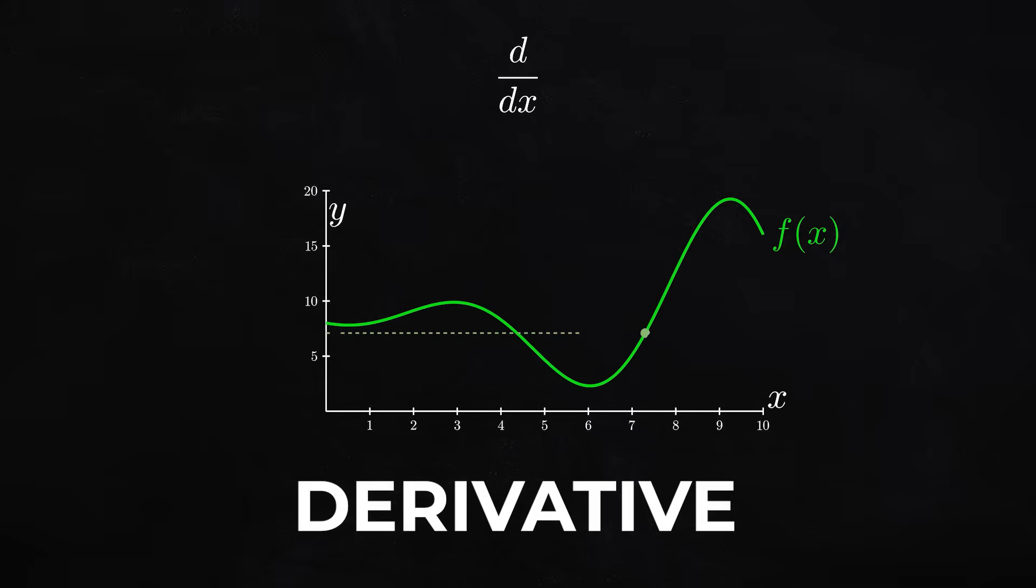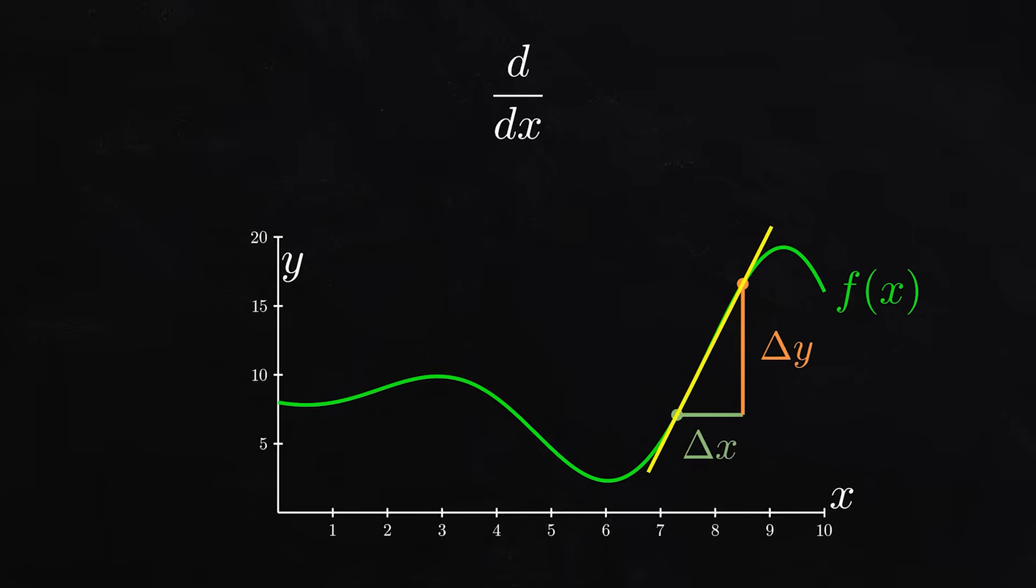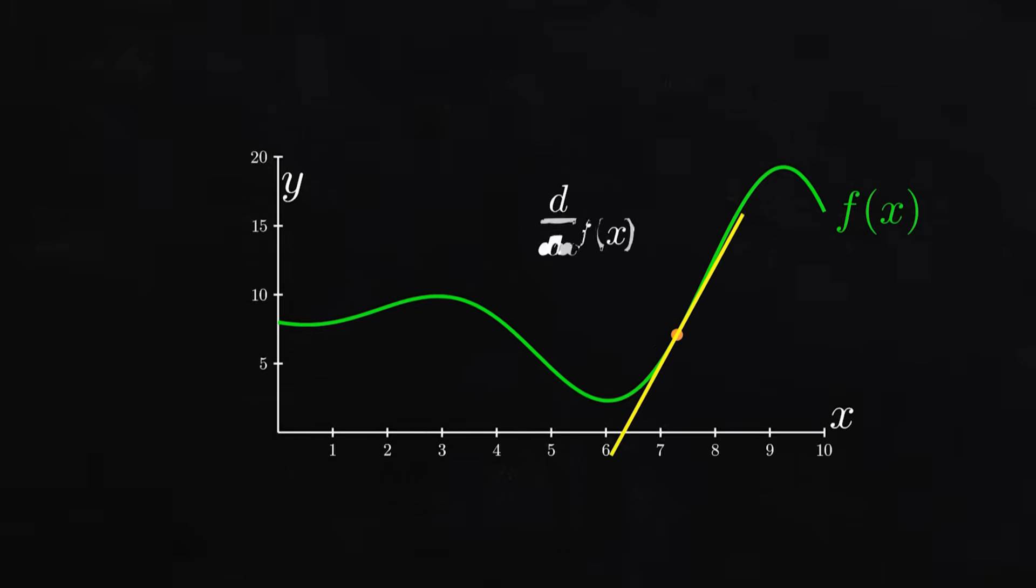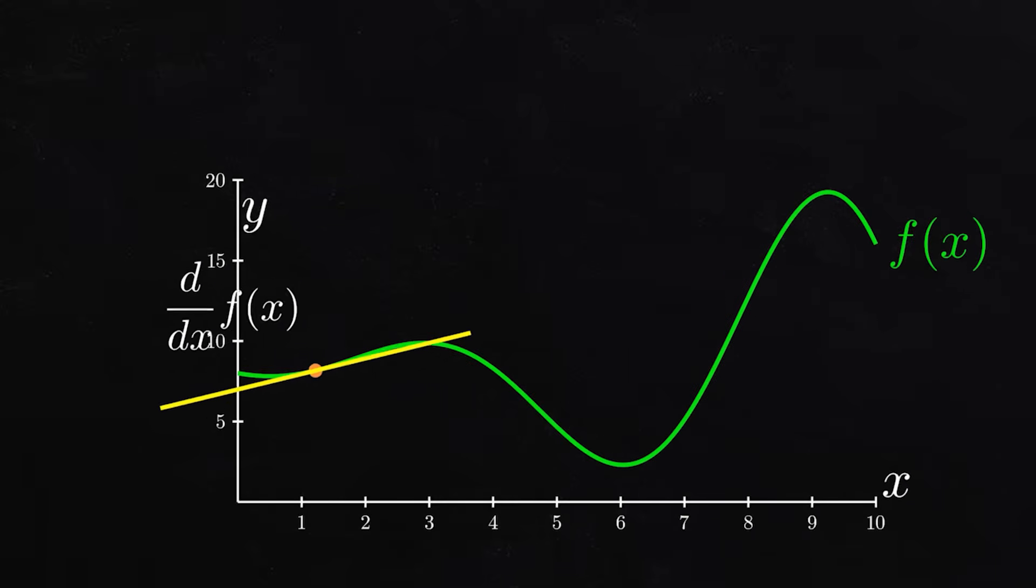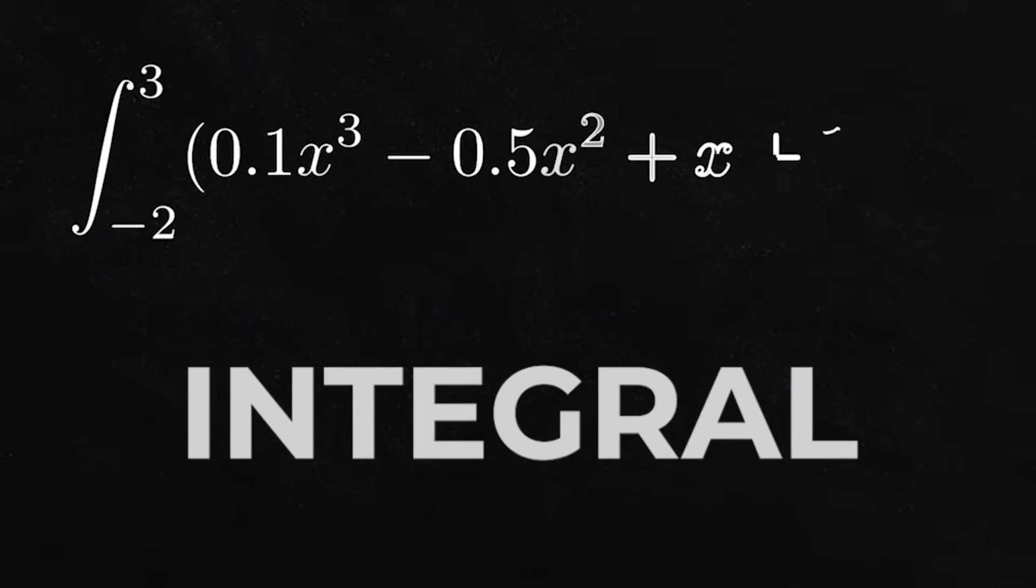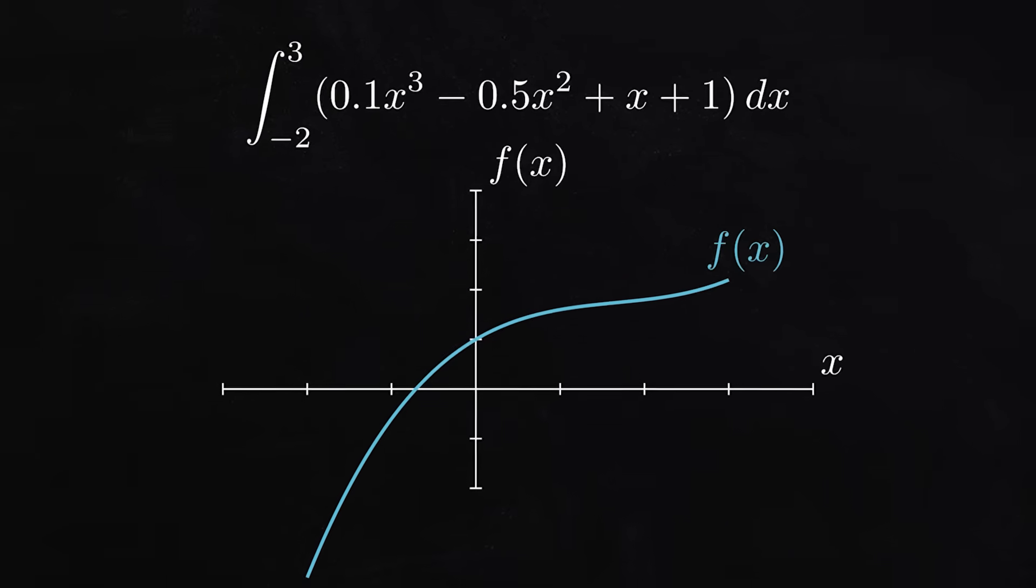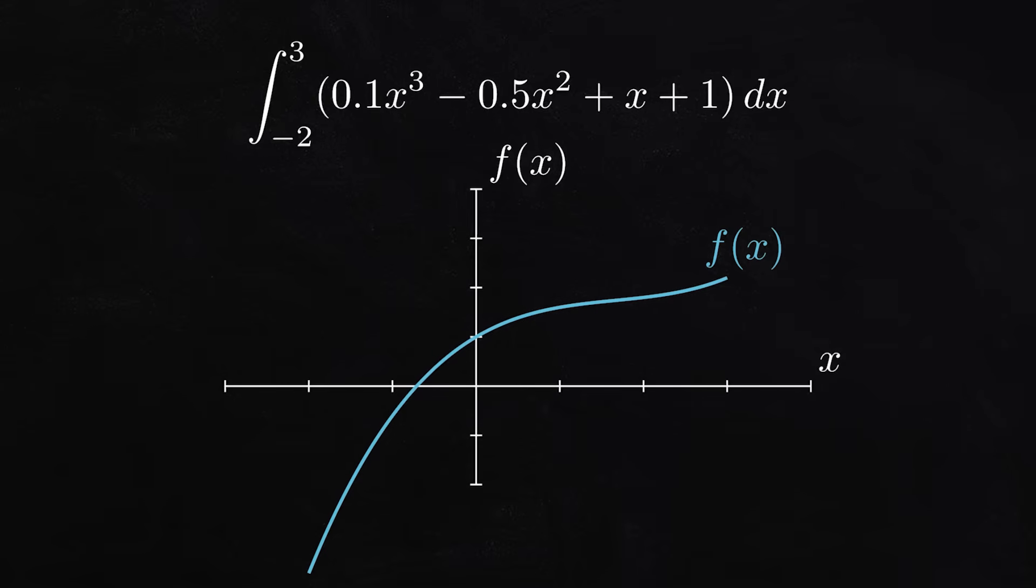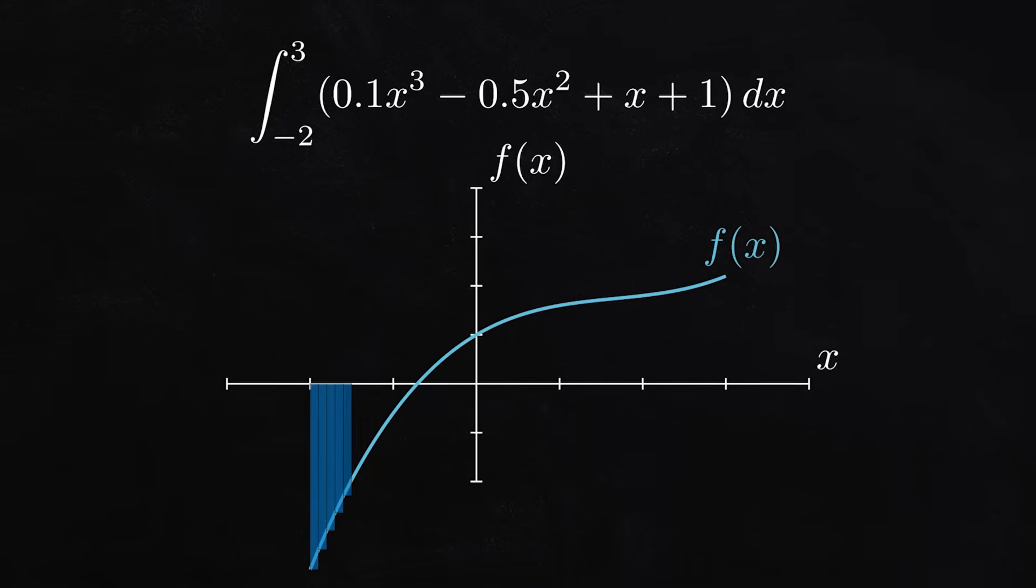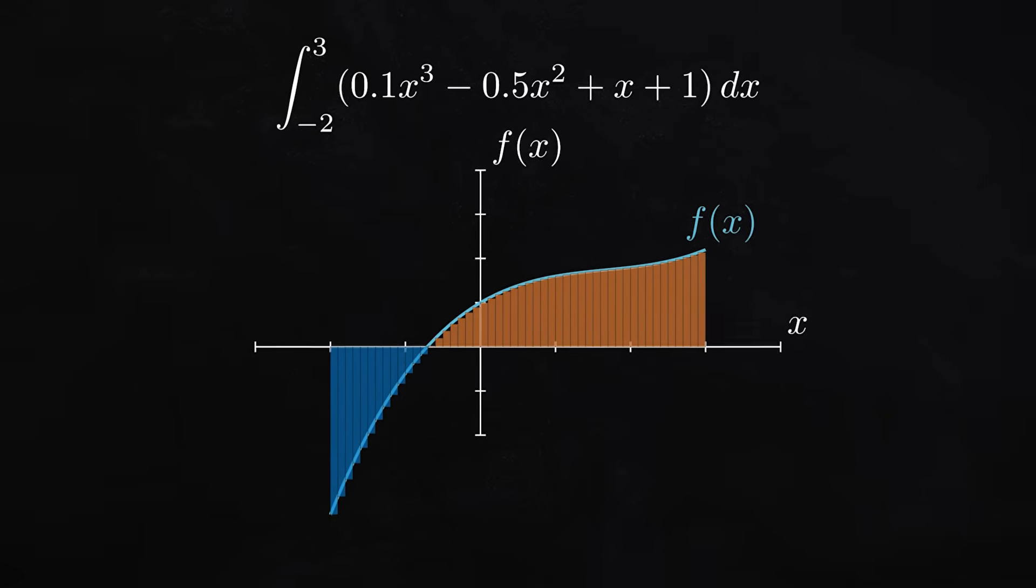This is the derivative, and it's a mathematical operation that allows us to find the slope of our function f at any point. If we take the derivative again, the second derivative tells us the concavity, basically how the function is curving. This is an integral, and it's a mathematical operation that allows us to find the area under a function f between that function and the horizontal or x-axis. The integral is also the opposite of the derivative, in the same way that multiplication and division are inverse operations.